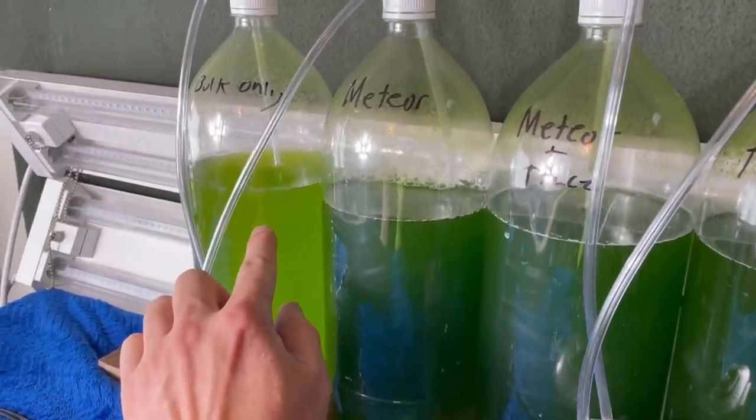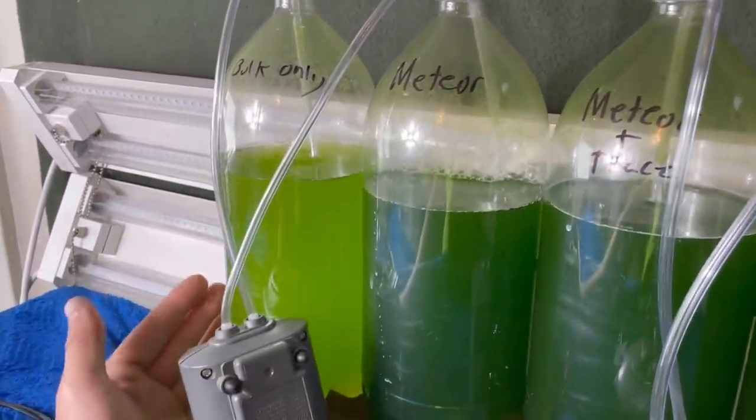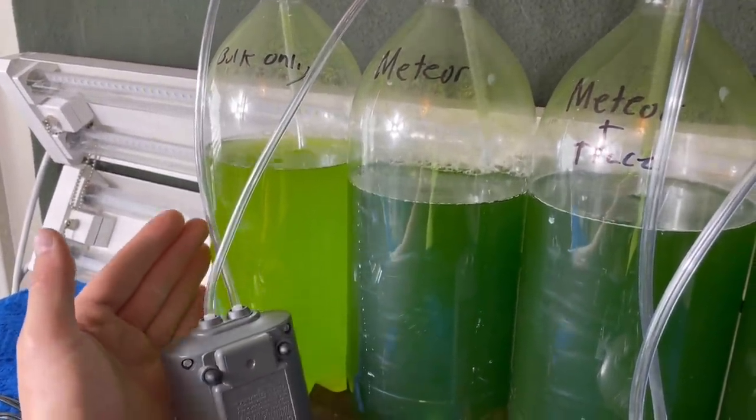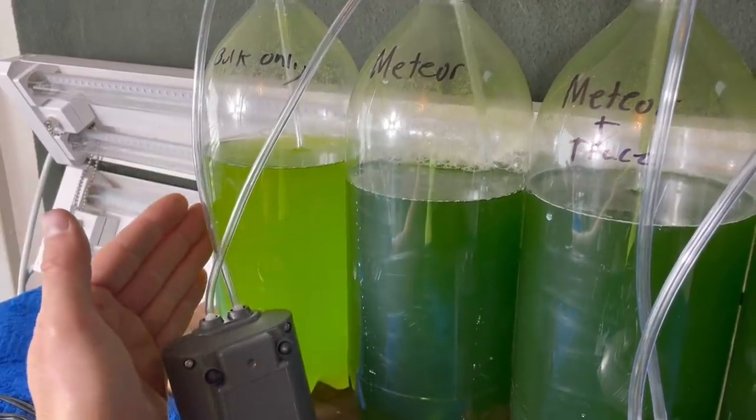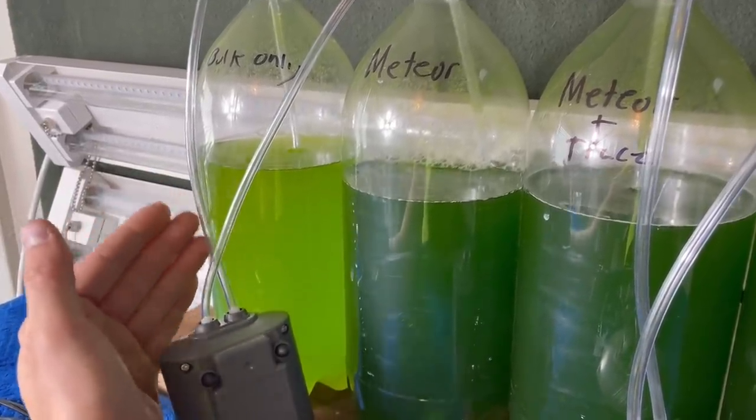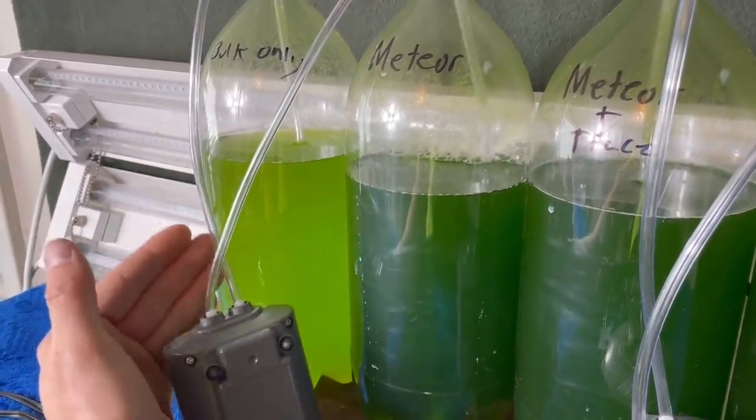But this bottle over here on the end is a pale yellowish green color. Now any gardener would know that this is what you see in plants when they're deficient in iron.